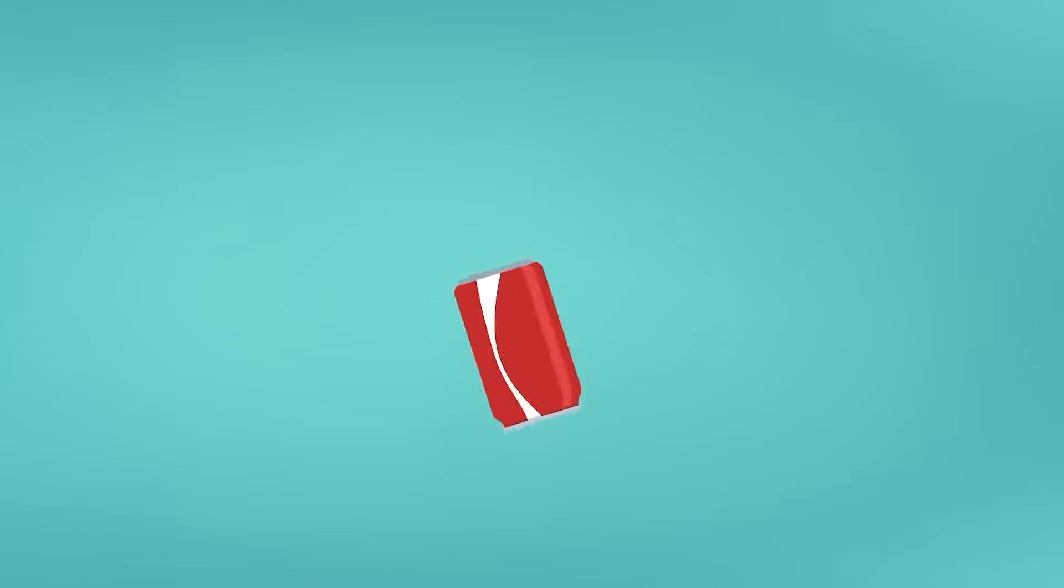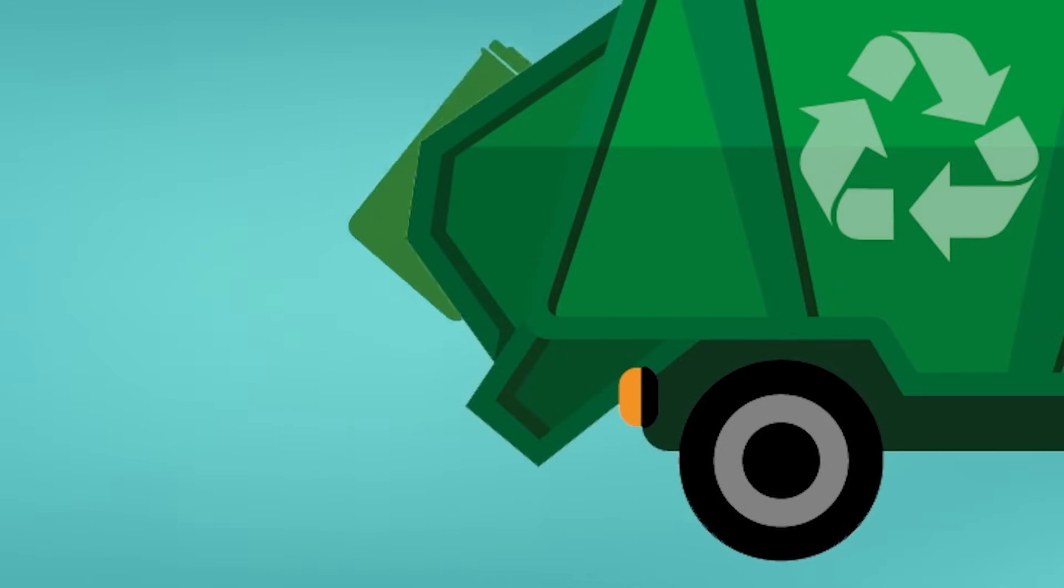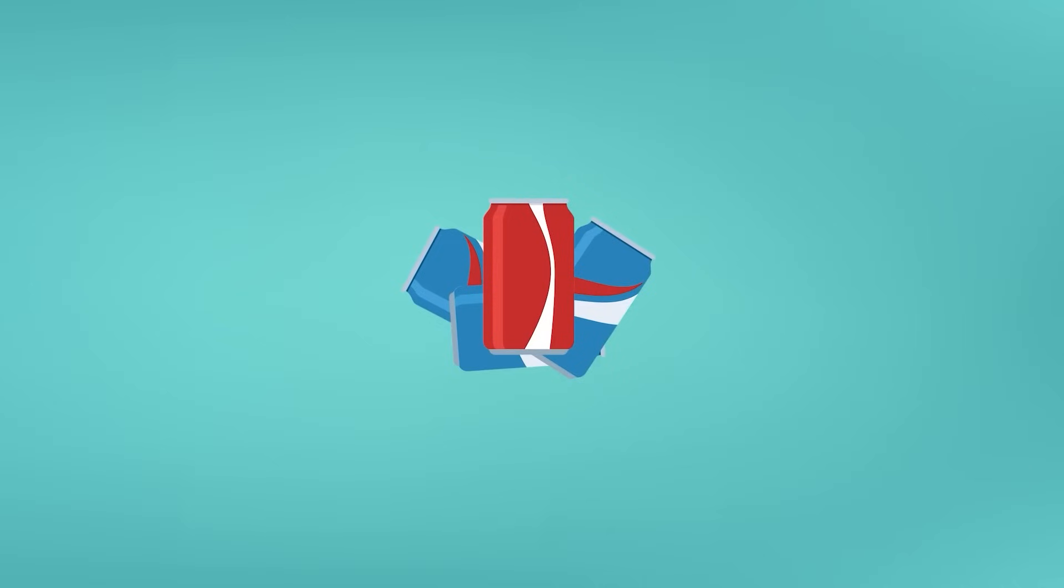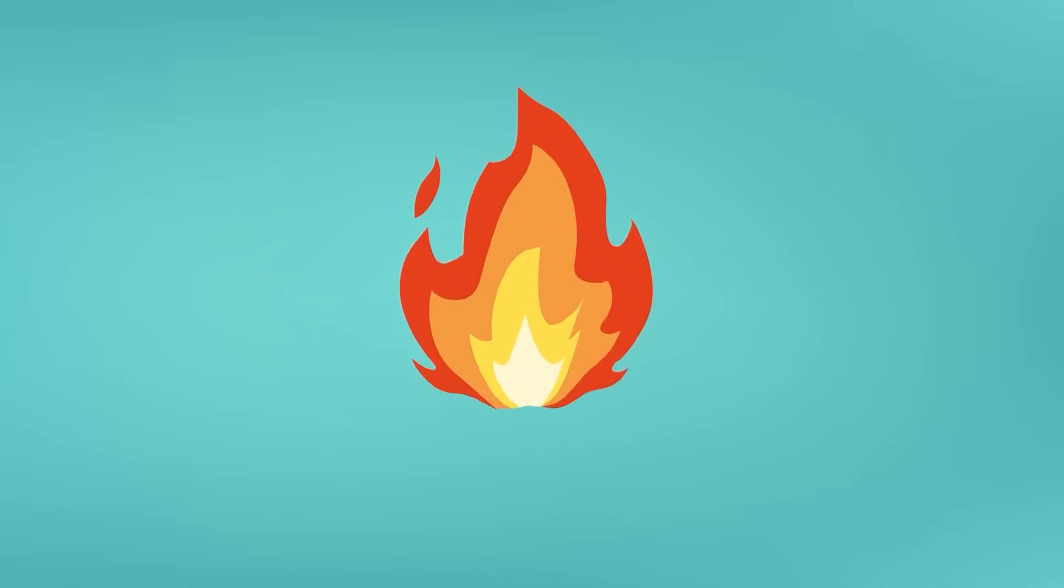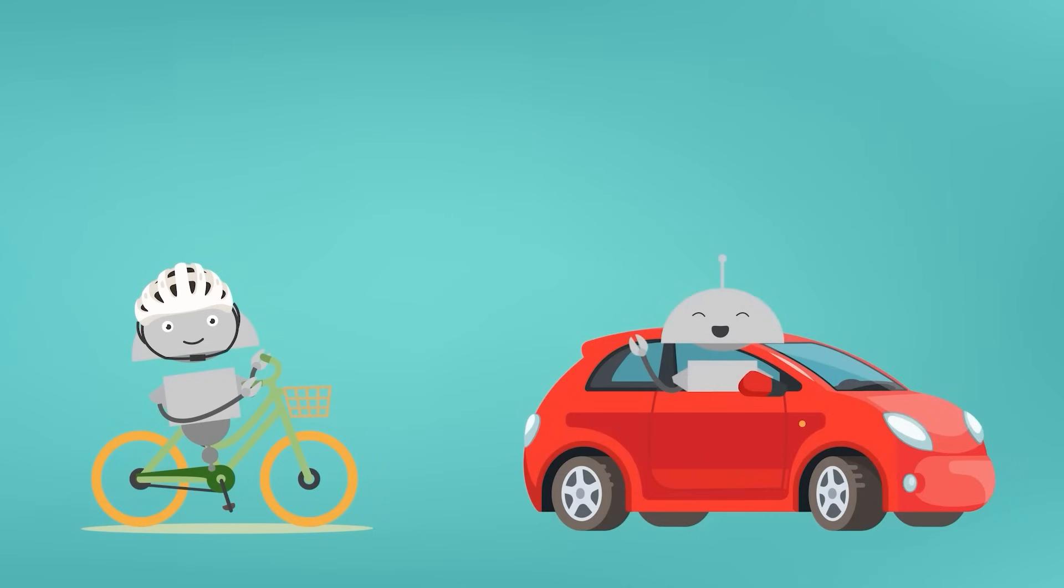Instead of throwing the can away, it's rinsed and placed in a recycling bin where it'll be collected and taken to a recycling center. At the center, the can will be carefully sorted so it's only with other pieces of aluminum. All the aluminum is then crushed into tiny pieces, then melted into molds to create new products. What was once your soda can could become part of a bicycle, a car, or even an airplane.